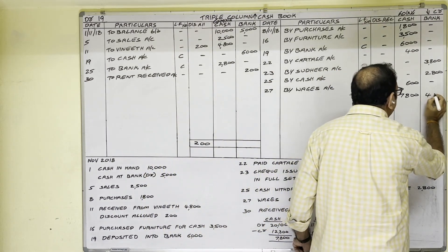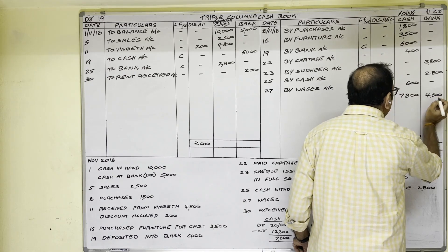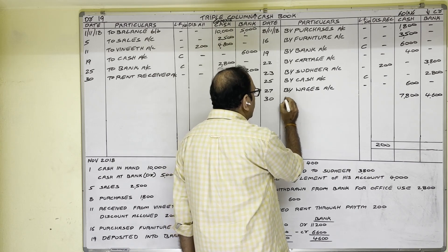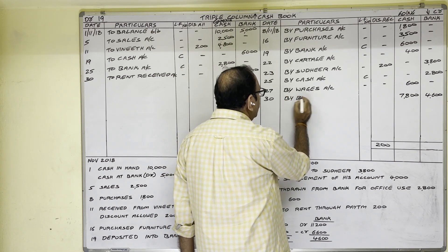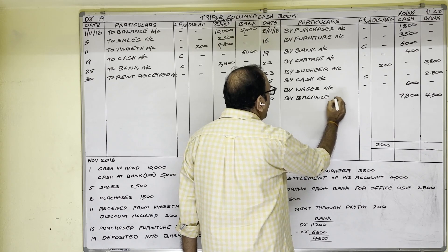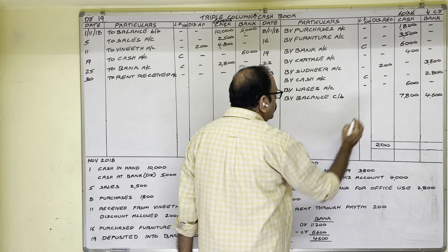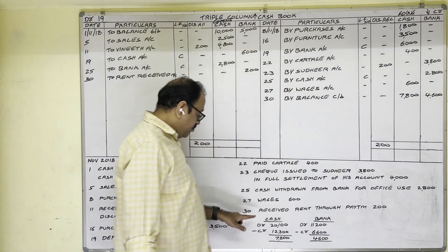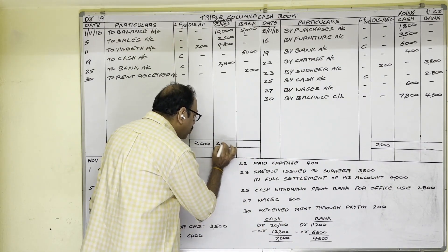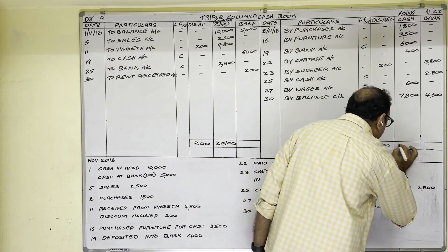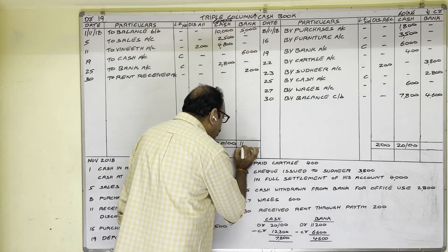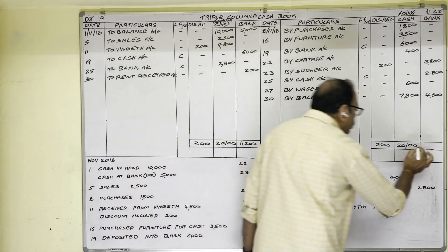For both balancing figures, the date is the last date of the month: 30th. Write 'By Balance carried down'. The highest total for cash is 20,100 rupees — write this on both debit and credit sides. For bank, the highest total is 11,200 — write this on both debit and credit sides.